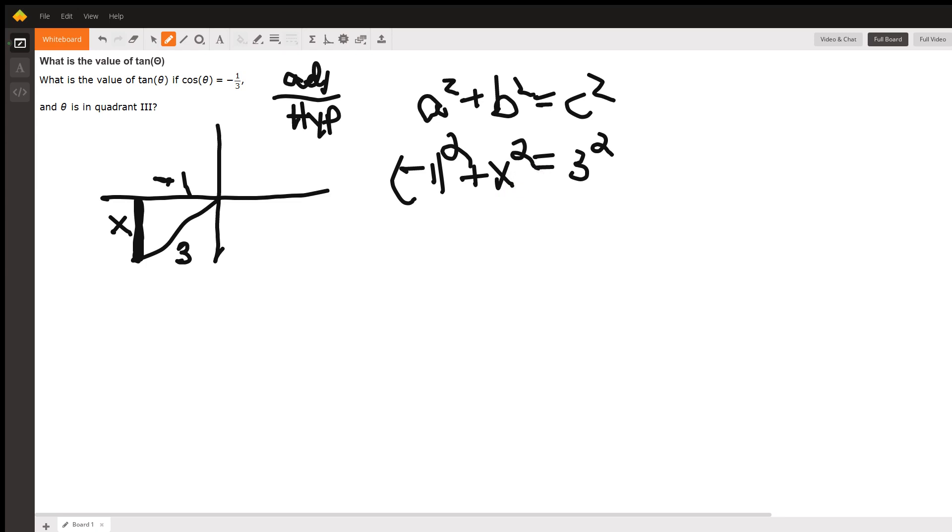All right, so I've got one plus x squared equals nine. Let's subtract one from both sides, and now it looks like I'm going to have x squared that equals eight.